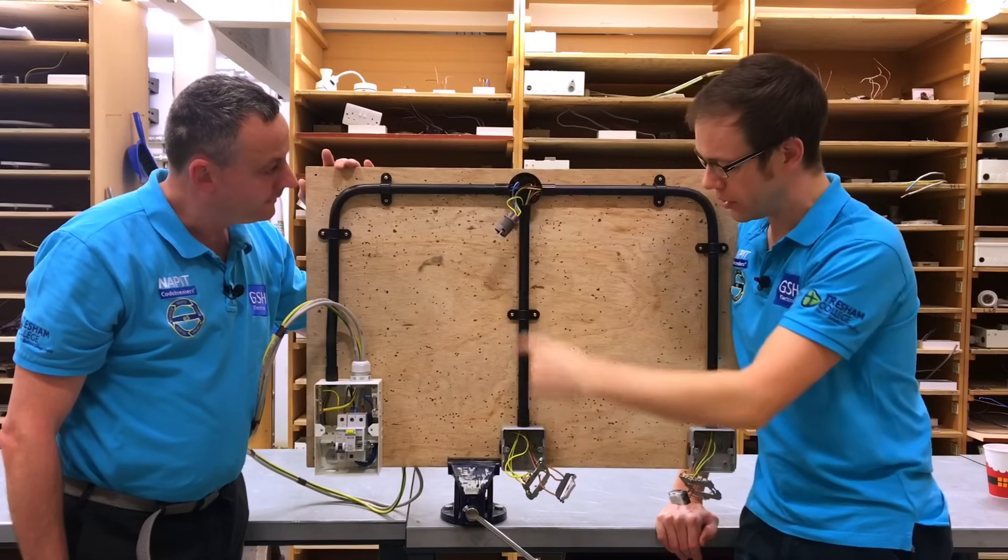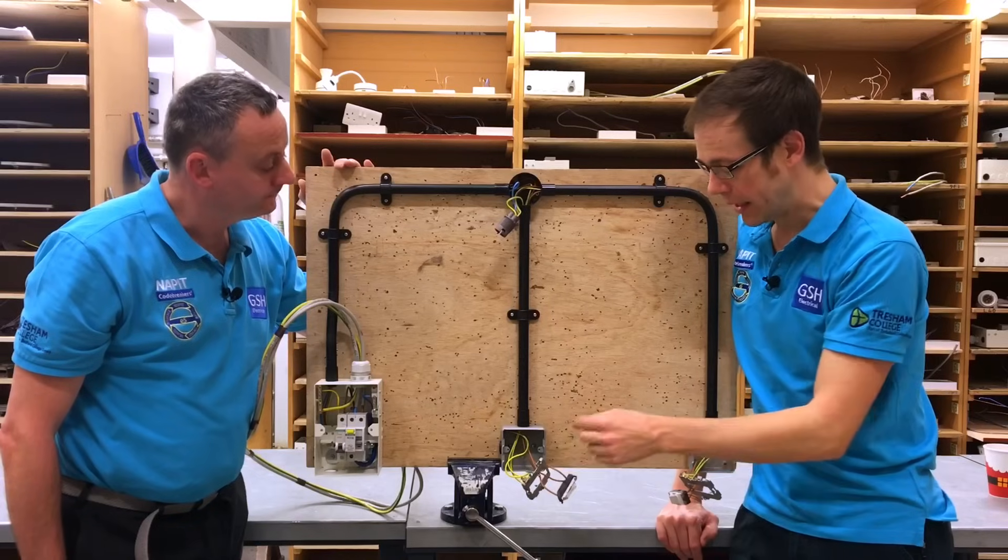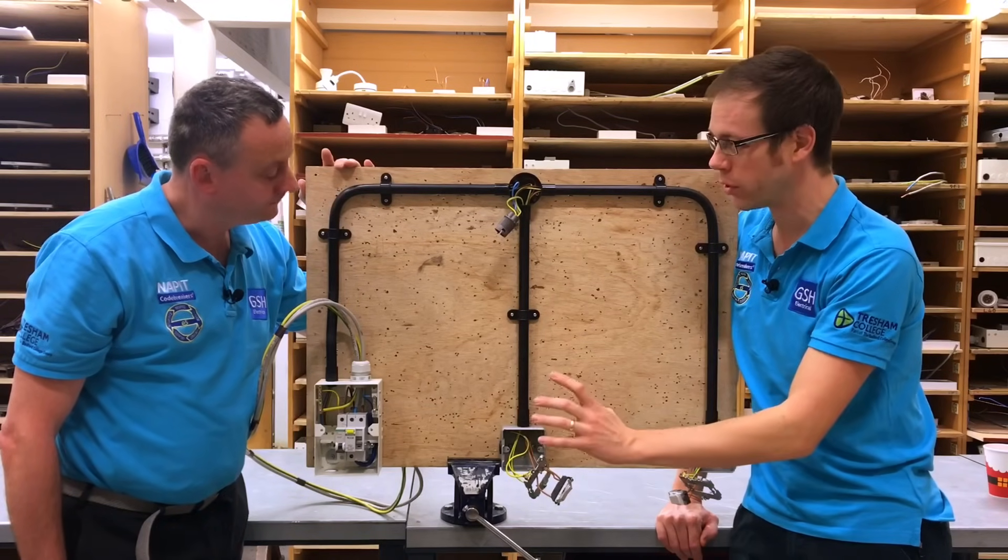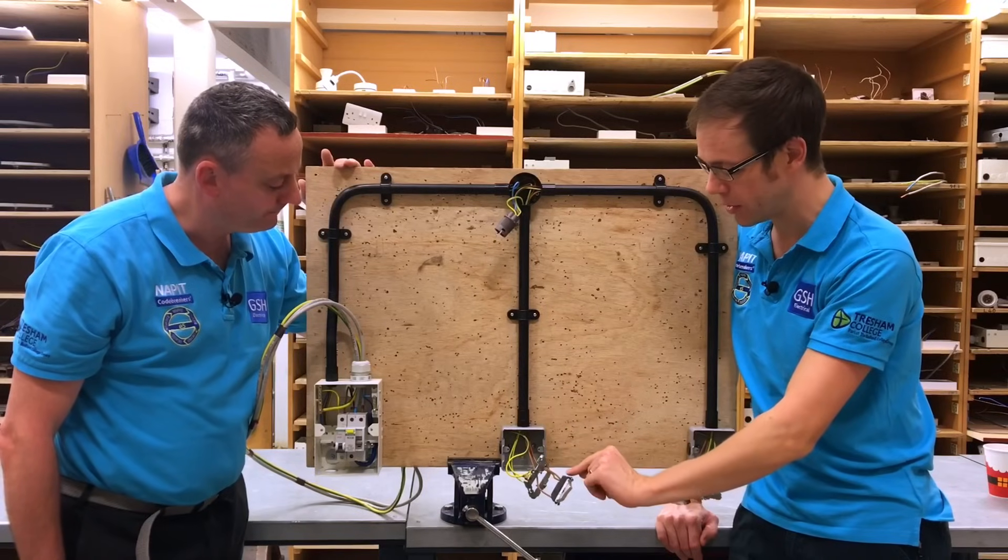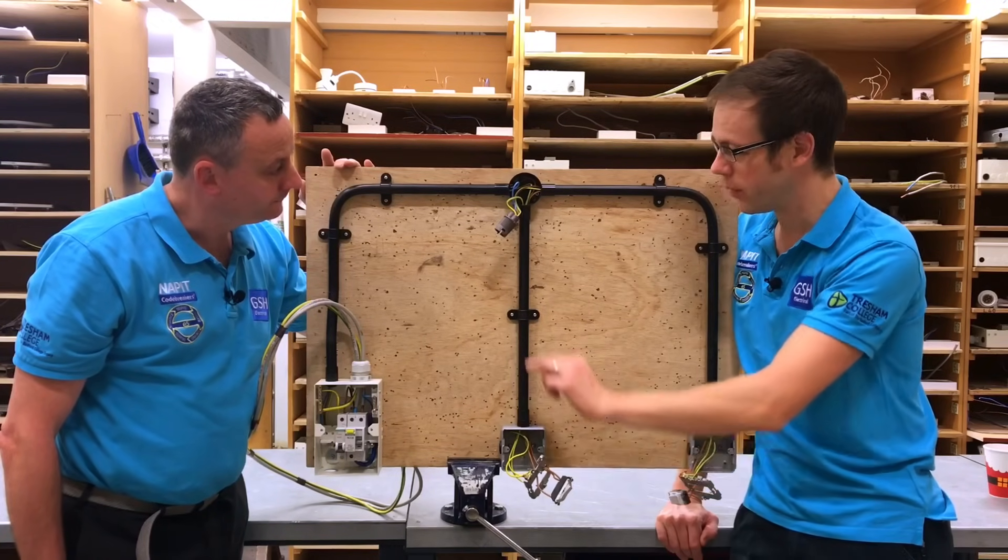We take it straight to the first switch position into the common of the switch, and then out of L1 and L2 on the two switches. Depending on what switch manufacturer you're using they might be labeled slightly differently. We then take two conductors, one from each of those terminals, over to the next switch.